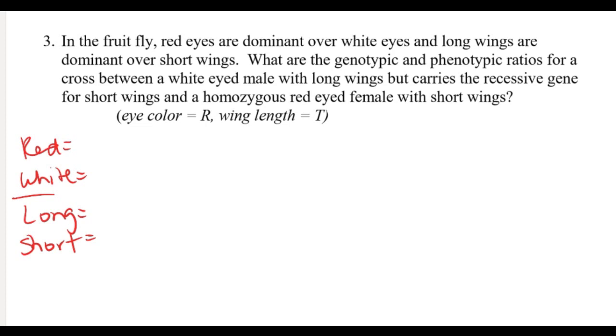Our last and final question: we have fruit flies, and we have red is dominant over white, long wings are dominant over short. It tells me to use R and T. I'm going to cross a white-eyed male with long wings, so white male is two little r's. Long wings - now long is a dominant trait, so it can either be homozygous or heterozygous - so I need to continue reading. It carries the recessive gene for short wings, so that means it's going to be heterozygous. And homozygous red with short - so homozygous big R big R, short wings homozygous recessive.